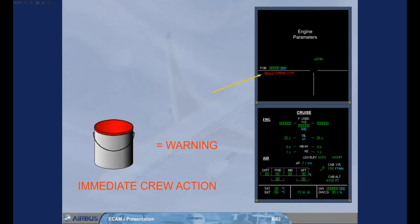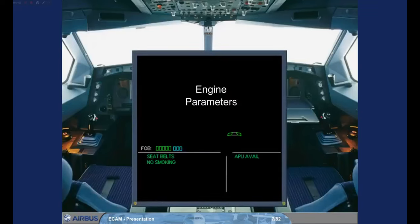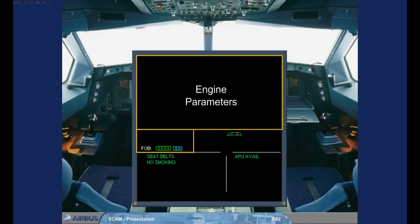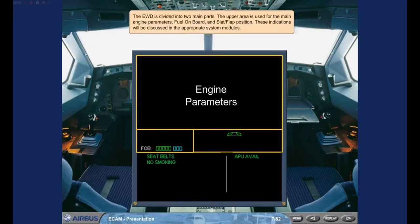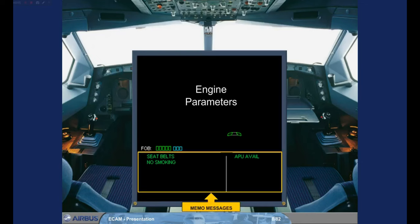Let's now look at the two ECAM displays in a little more detail. The Engine Warning Display is divided into two main parts. The upper area is used for the main engine parameters, fuel on board, and slat/flap position. These indications will be discussed in the appropriate system modules. Under normal conditions, the lower part of the Engine Warning Display is used to display memos. In the example shown, the memos indicate that the seat belt and no smoking signs are switched on and that the APU is available for use.